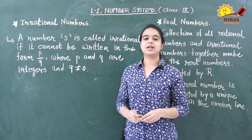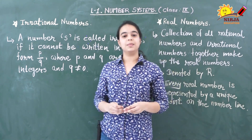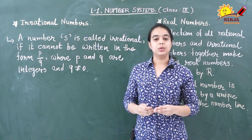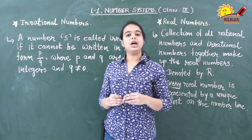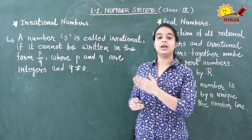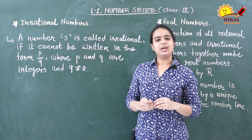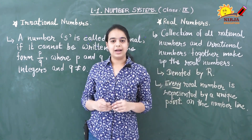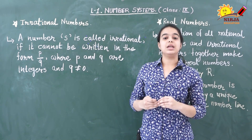Hello students. In the previous section we discussed that there may be numbers on the number line which cannot be written in the form of p by q. In this section we are going to investigate this. Till now you may have come across only numbers that we can write in the form of p by q. The question arises: are there numbers which cannot be written in the form of p by q? The answer is yes, and these numbers are known as irrational numbers.